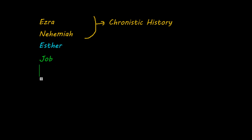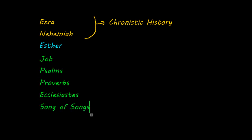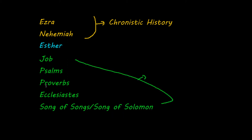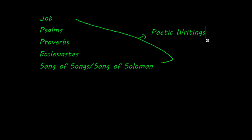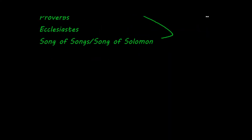The next group is a different type of books: the poetic books. The first one is Job, the second is Psalms, the third is Proverbs, then Ecclesiastes, and finally Song of Songs, sometimes also called the Song of Solomon. They contain poetry, songs, wisdom sayings, and even erotic poetry.